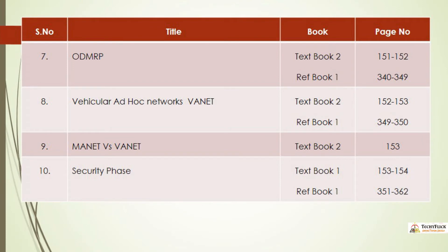Reactive Routing Protocols — Reference Book 1, pages 340 to 349. Vehicular Ad Hoc Networks (VANET) — Textbook 2 pages 152 to 153, Reference Book 1 pages 349 to 350.